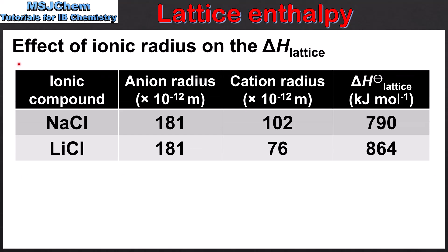The first factor we'll look at is the effect of ionic radius on the lattice enthalpy. In this table we have data for two ionic compounds: sodium chloride and lithium chloride. The radius of the anion is the same for both compounds, which both contain the chloride ion. However, the cation radius is different. The lithium ion has a smaller radius than the sodium ion, and lithium chloride has a higher lattice enthalpy than sodium chloride. The reason for this is that the smaller the ionic radius, the greater the attraction between the ions and the stronger the ionic bond, resulting in a higher value for the lattice enthalpy.